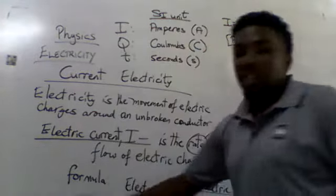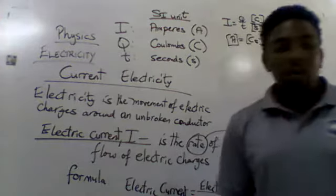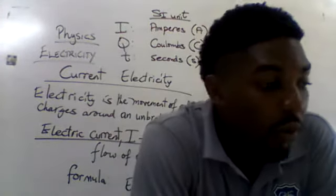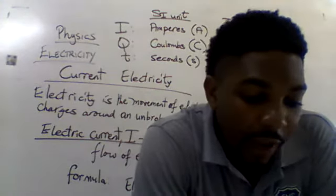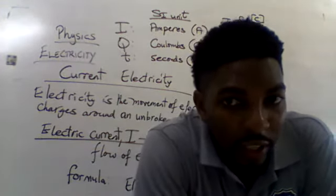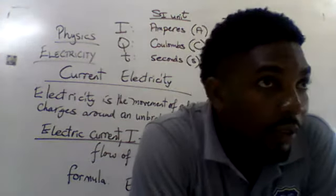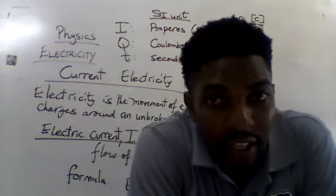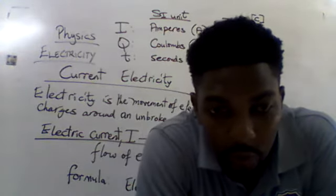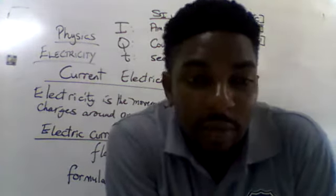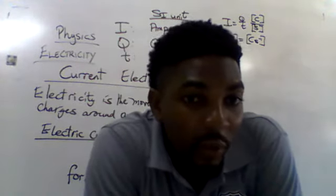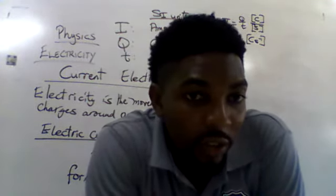Electricity is the movement of electric charges around an unbroken path. A conductor is a material that allows charge to flow through it, whereas an insulator is a material that does not allow charge to flow through it. There are different ways in which charge can flow through a conductor.